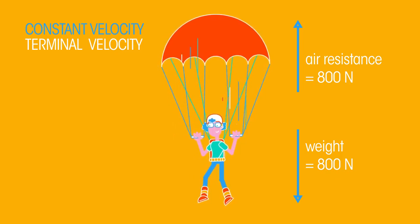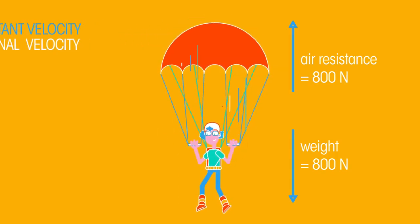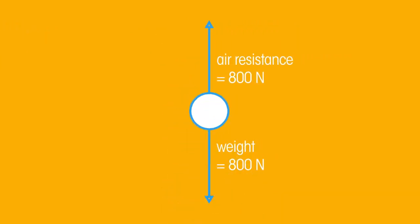We can also draw these force diagrams without showing the object involved. These are called free body diagrams. For example here is a free body diagram of the forces acting on the parachutist.